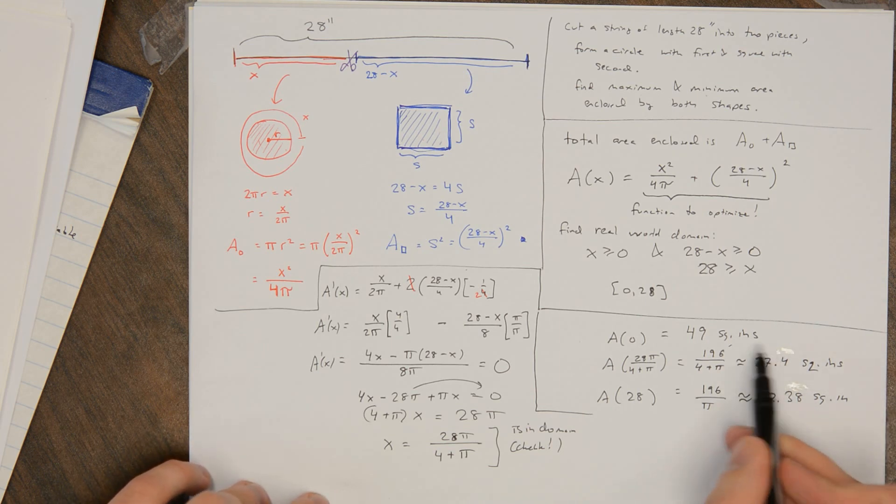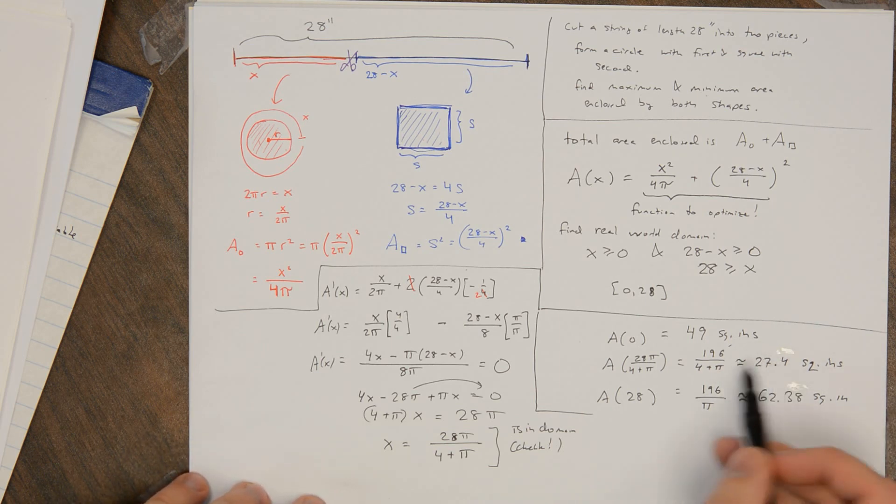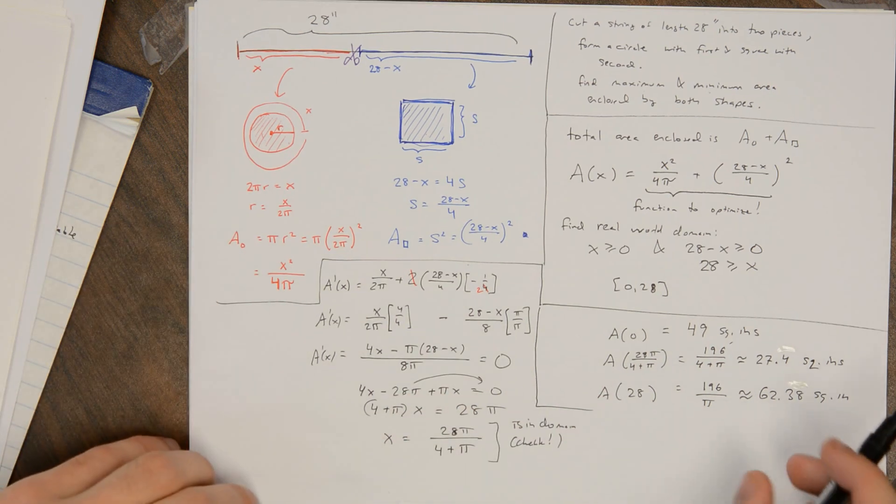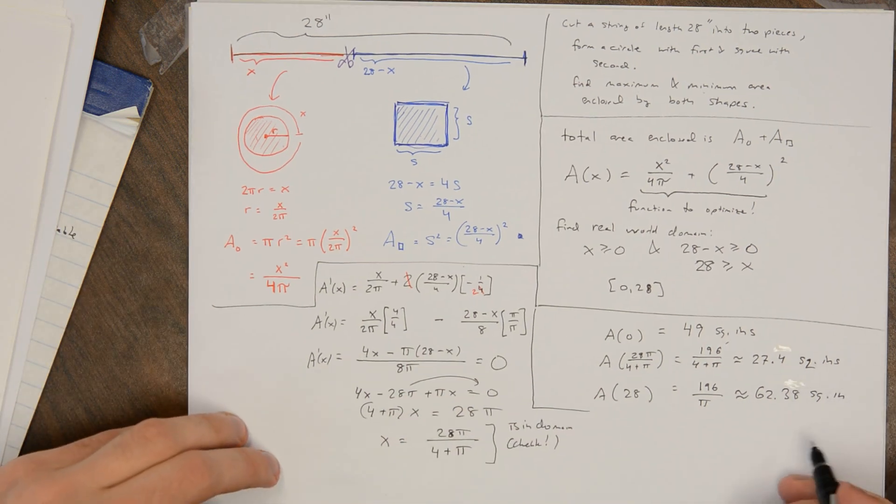The main thing is just we know which one of these is the smallest and which one is the largest. So very interestingly, the smallest total area you can enclose is when you make a little circle and a little square. And the largest area you can enclose, which is not surprising, is just with the circle.